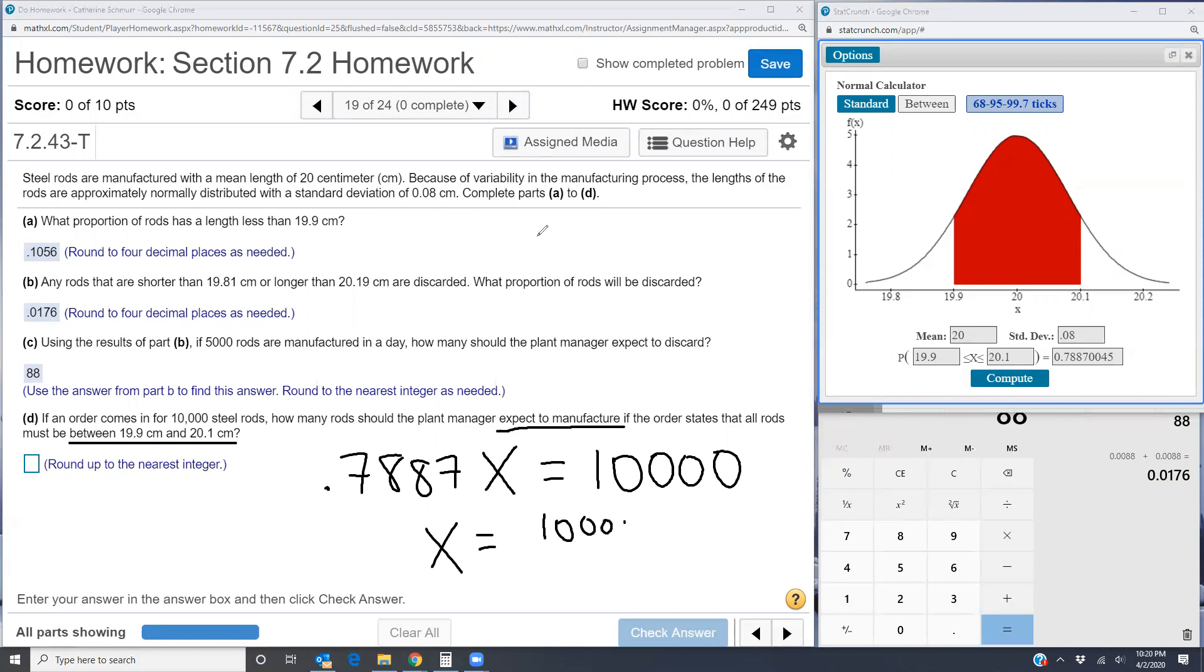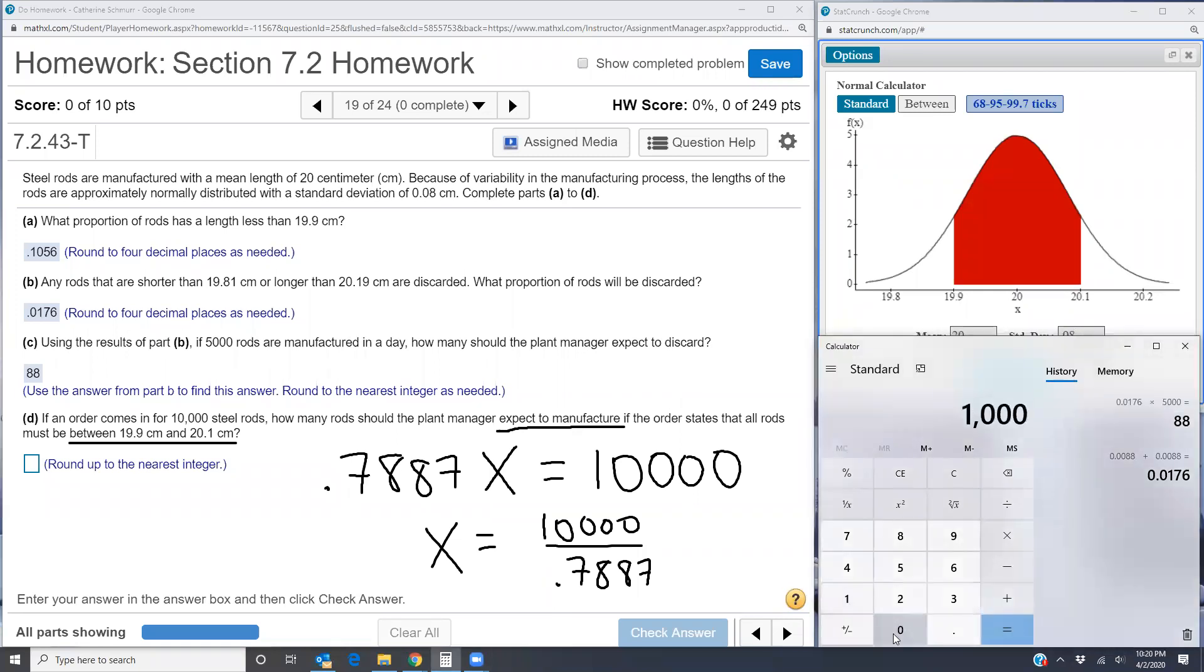I can find x by doing x equals 10,000 divided by 0.7887. So 10,000 divided by 0.7887. The plant manager is going to have to manufacture 12,680 rods in order to guarantee that 10,000 are going to be within the specifications.